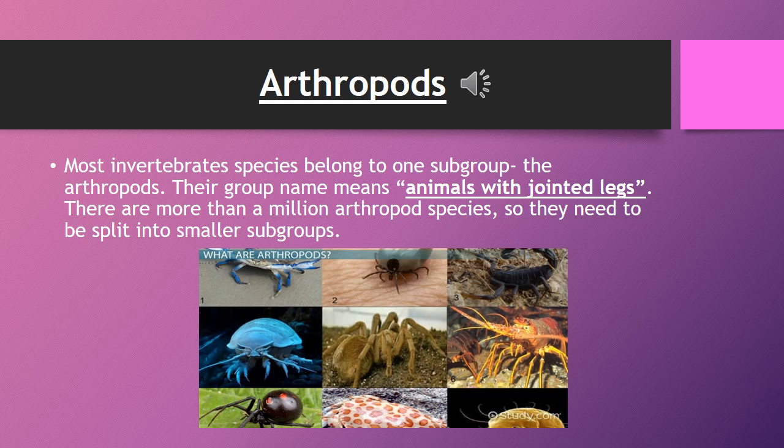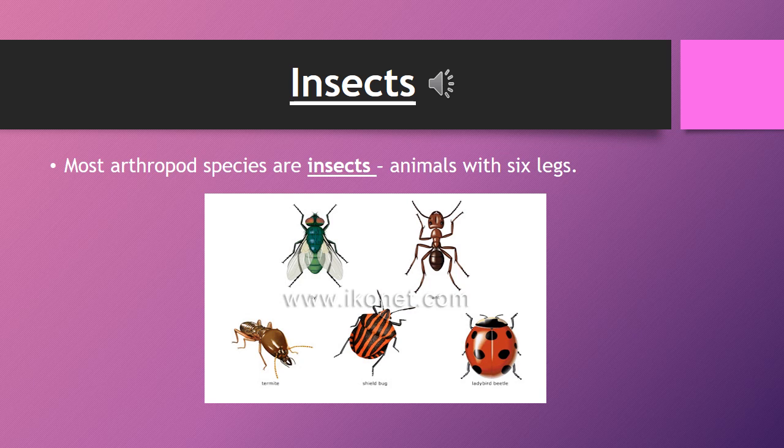Arthropods. Arthropods are a large group of invertebrates, which means they do not have a backbone. Insects, spiders, and crabs are arthropods. The arthropod group's name means animals with jointed legs.